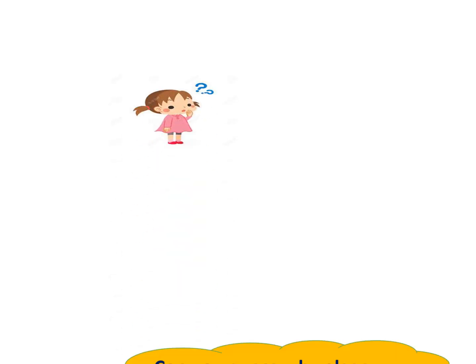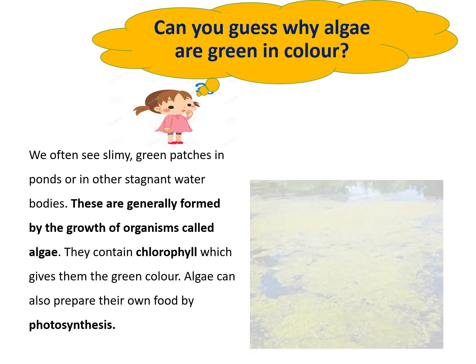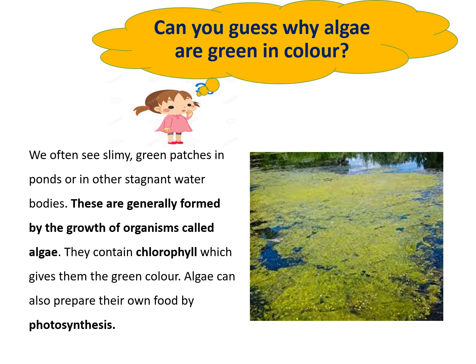Students, you must have seen algae all around yourself — some green slimy patches in ponds or stagnant water. These are known as algae. But why is algae green in color? It is green because it contains chlorophyll, which gives it the green color. Like plants, algae also prepare their food with the help of photosynthesis, as they also contain chlorophyll.